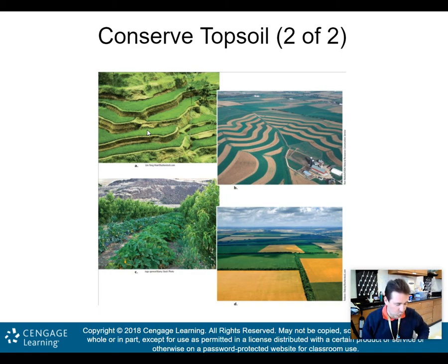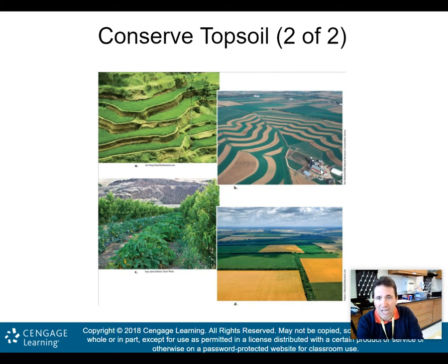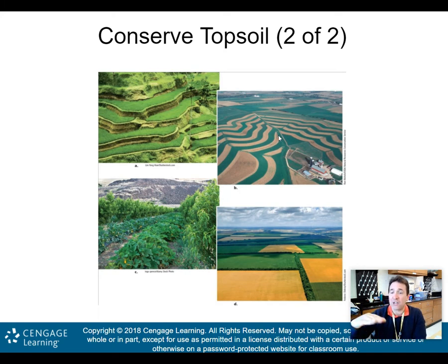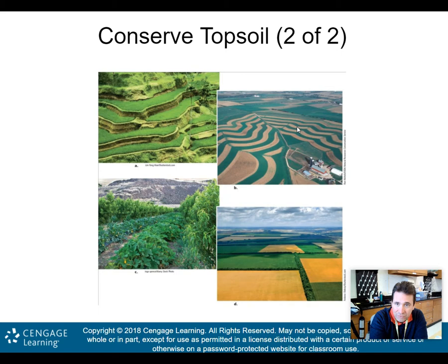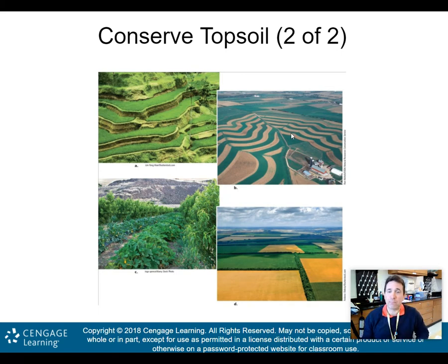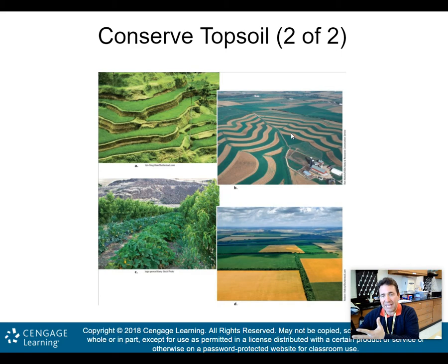Terracing is one way to conserve topsoil. The next method is contour plowing. In contour plowing, you plow along the contours of the land rather than going straight up and down rows. This also helps decrease erosion and topsoil loss because it creates flatter areas where rain can infiltrate the ground instead of running off and taking topsoil with it.